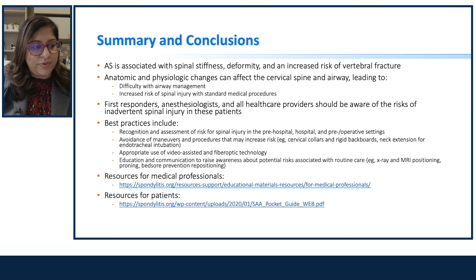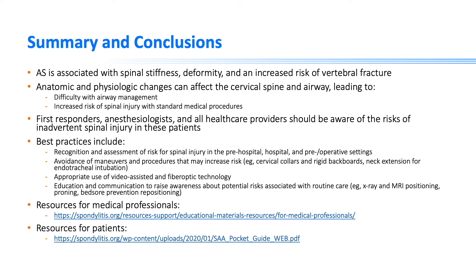In summary, ankylosing spondylitis is associated with spinal stiffness, deformity, and increased risk of vertebral fracture. Anatomic and physiologic changes affect the cervical spine and airway, leading to difficult airway management and increased risk of spinal cord injury with standard medical procedures. Direct laryngoscopy is not ideal for AS patients; instead, video laryngoscopy, fiber optic intubation, or LMAs and intubating LMAs should be considered. All first responders, anesthesiologists, and healthcare providers should be aware of the risk of inadvertent spinal cord injury during hospital stay, ICU stay, operating room procedures, and patient positioning.